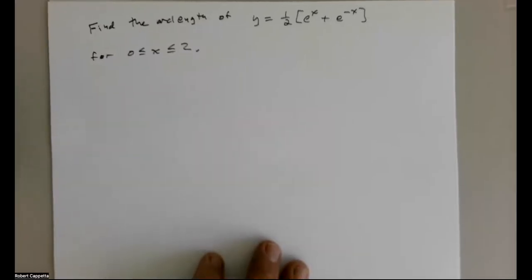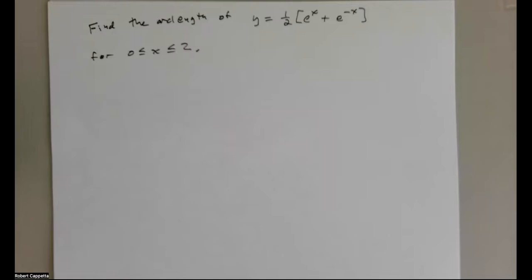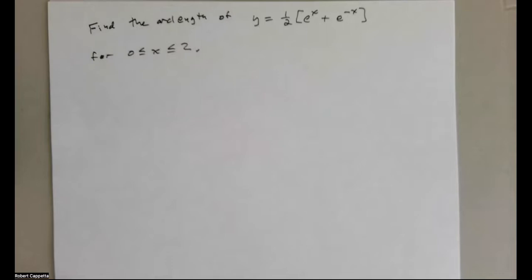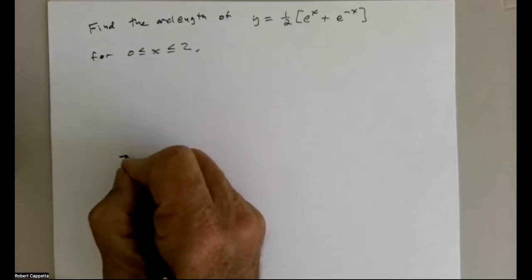We want to find the arc length of y equals one half e to the x plus e to the negative x, for x values on the interval from zero to two. So how are we going to do that? We want to remind ourselves of how the arc length process works.